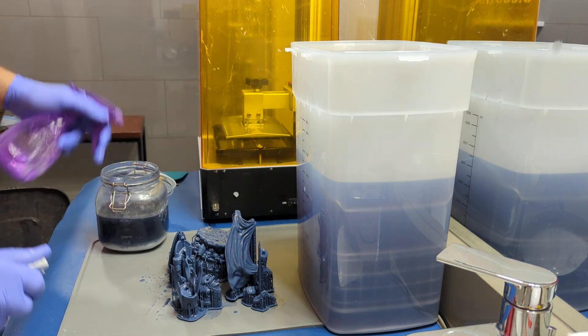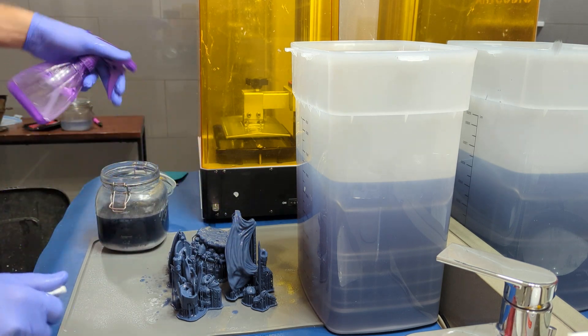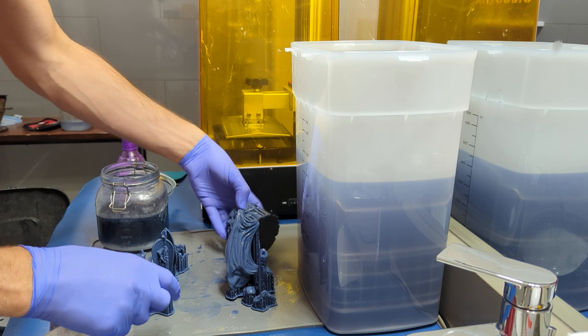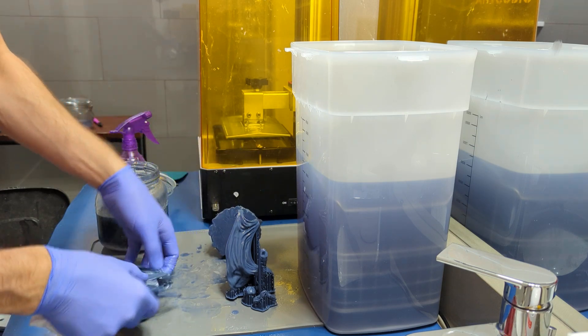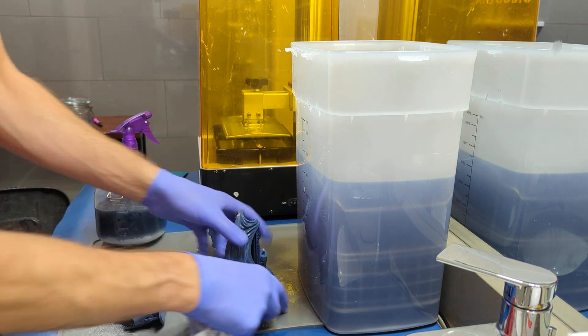First thing I like to do is give them a quick spray down. This just removes some of the bigger chunks of resin that's on it. There's no reason to try and put all that in my tanks, even my dirty IPA.